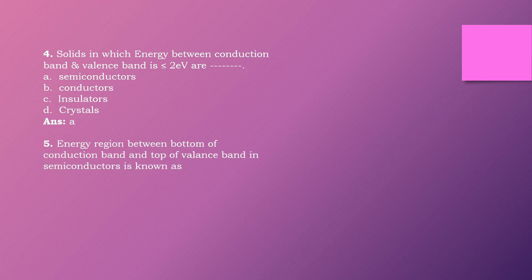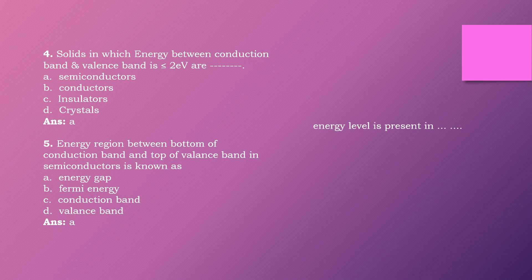Question five: The energy region between the bottom of the conduction band and the top of the valence band in a semiconductor is known as dash. Options are: energy gap, Fermi energy, conduction band, valence band. The right answer is option A: energy gap.